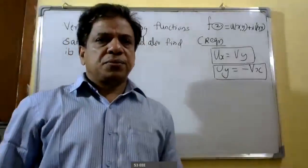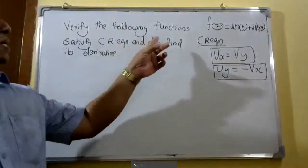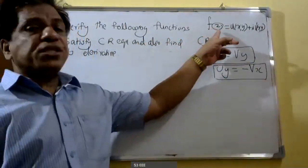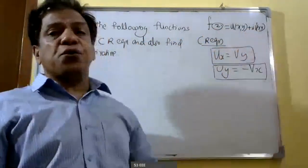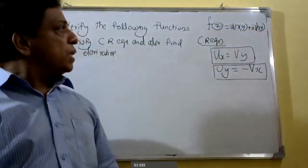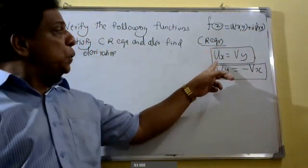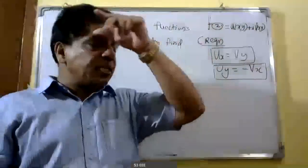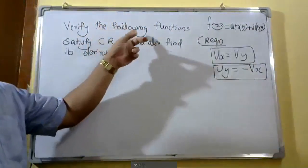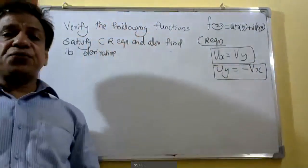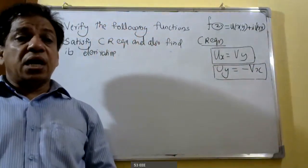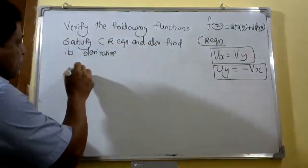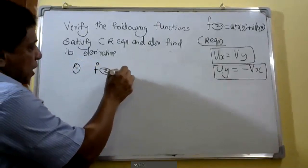Good morning students. Last class we discussed the Cauchy-Riemann equations. A complex function f of z is equal to u of xy plus i v of xy. The Cauchy-Riemann equations say that u_x is equal to v_y, and u_y is equal to minus v_x. In this class, we verify the following functions satisfy the Cauchy-Riemann equations and also find their derivatives. The first problem: f of z is equal to z square.